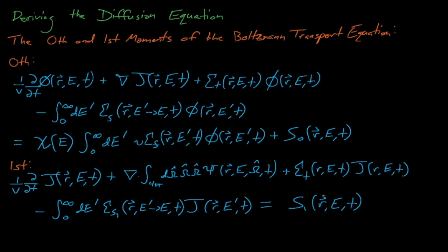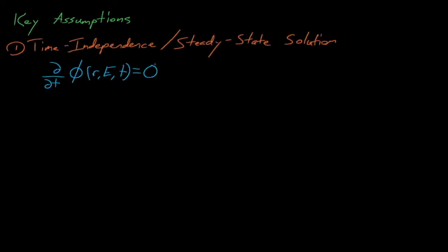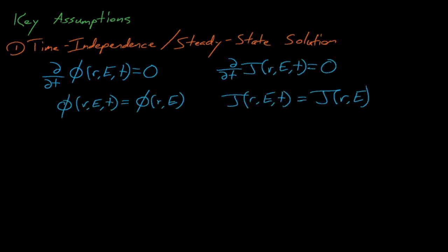From here, we're going to make a series of five assumptions to derive the diffusion equation. The first of these assumptions assumes that our system is in a constant or steady state condition. This means that all of our time rate of change terms are equal to zero, and also that our neutron fluxes and neutron currents are not a function of time.